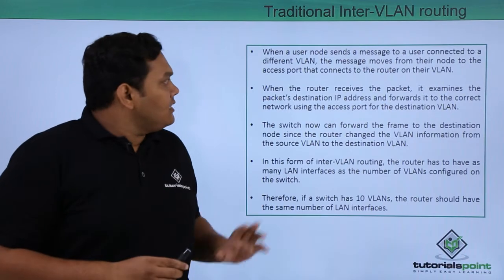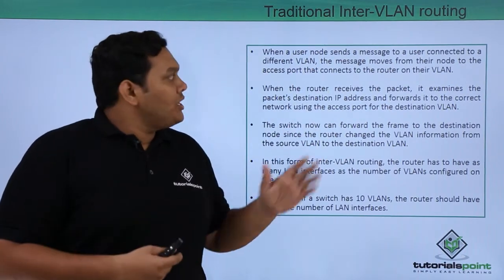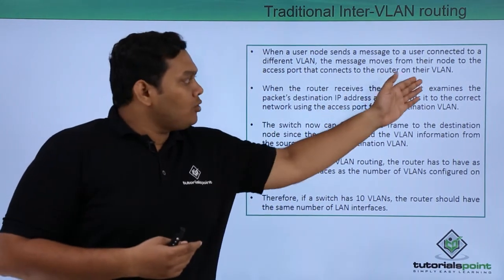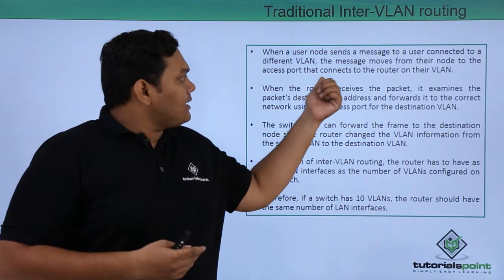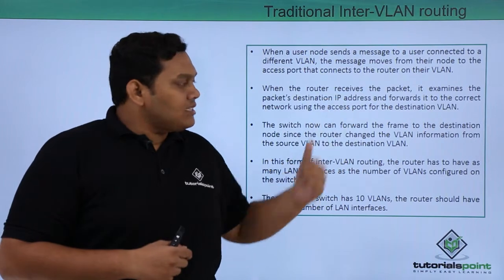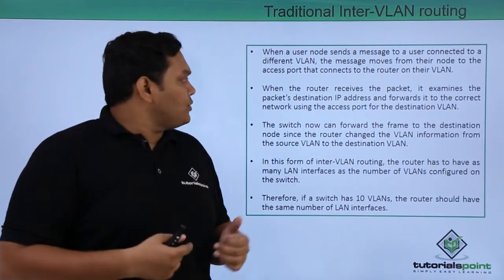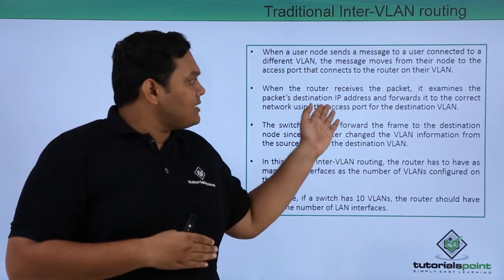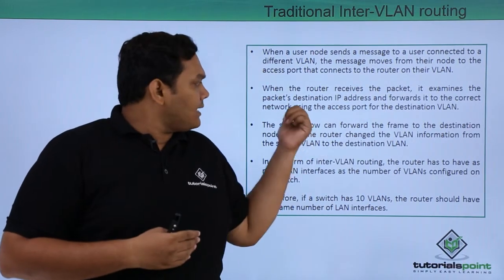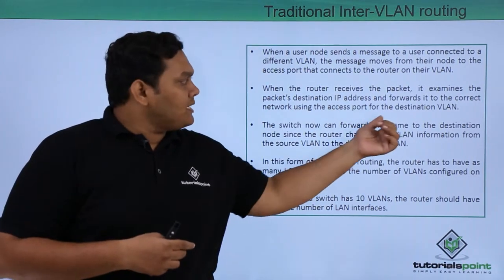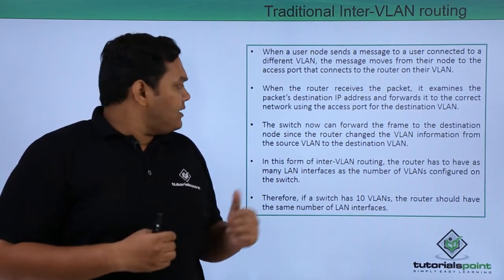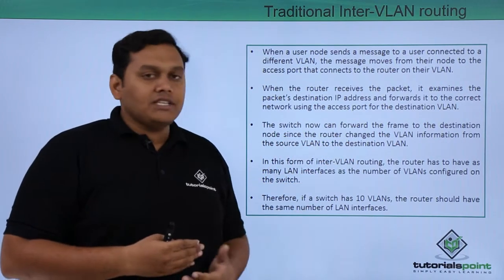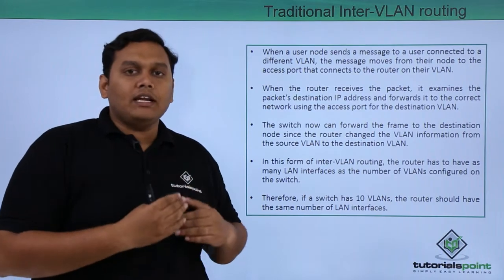When a user node sends a message to a user connected to a different VLAN, the message moves from that node to the VLAN access port that connects to the router. When the router receives the packet, it examines the destination IP address, and after looking up that address, it forwards the packet to the correct network using the access port for the destination VLAN. The switch then forwards the frame to the destination network, since the router changes the VLAN information from the source VLAN to the destination VLAN.